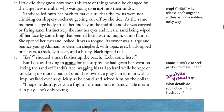Sandy rolled onto her back to make sure that the twins were not climbing on the slippery rocks or getting cut off by the tide. At the same moment, a large body struck her forcibly in the midriff — like her abdomen — and she was covered by flying sand. Instinctively she shut her eyes and felt the sand being wiped off her face by something that seemed like a warm, rough, damp flannel. She opened her eyes and looked. It was a tongue. Its owner was a large and bouncy young Alsatian or German shepherd with topaz eyes, black-tipped prick ears, a thick soft coat, and a bushy black-tipped tail.